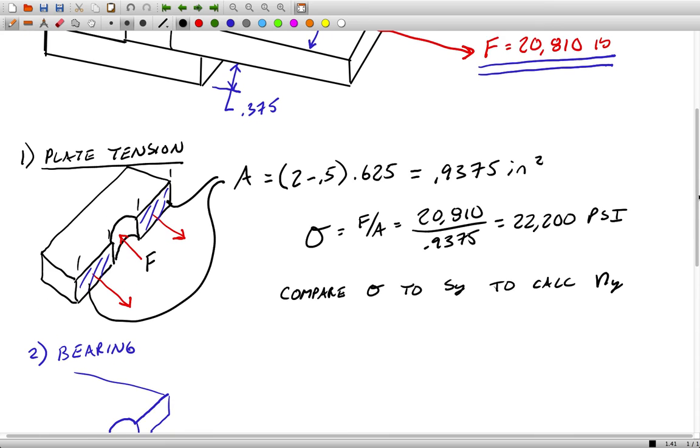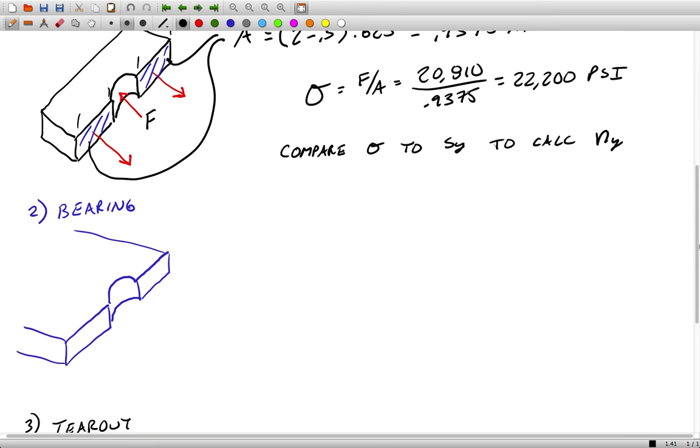You would compare in this case sigma to the yield strength to calculate a factor of safety if so desired.